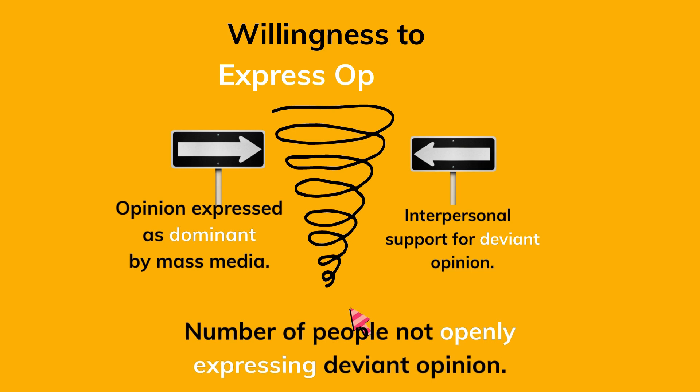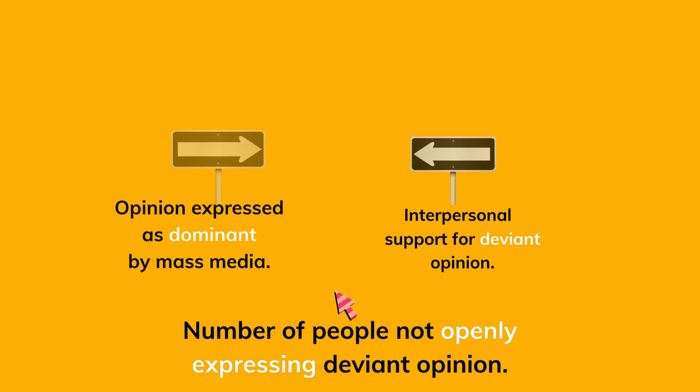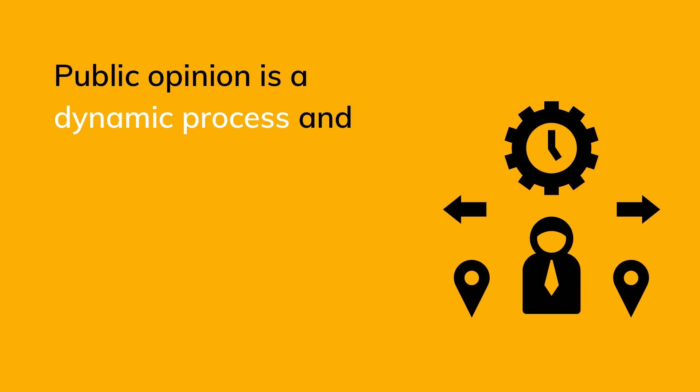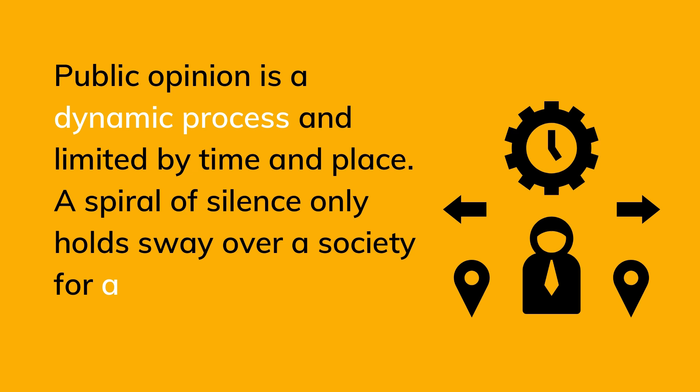These opposing pressures cause the downward spiral of silence, and the number of people openly expressing deviant opinion goes down. Because of this spiral of silence, very few people end up expressing non-dominant opinion. However, this spiral is not permanent — public opinion is a dynamic process limited by time and place, and a spiral of silence holds sway only over a limited period of time.